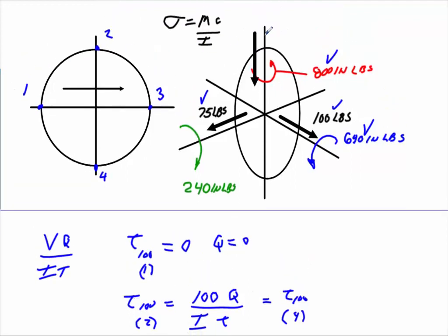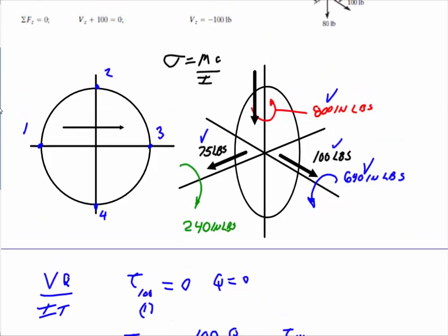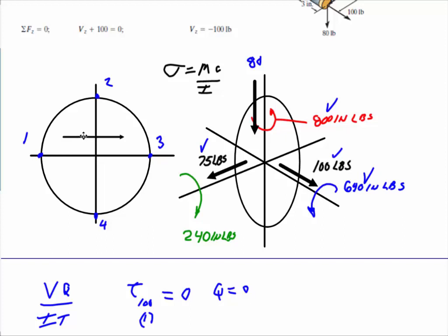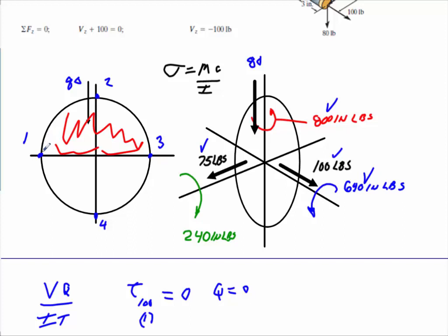Now if I want to find what the 80 is causing — I draw the 80 coming down — it's the same type of situation. The 80 cannot cause any shear at points 2 or 4 because I cannot get any Q value there. However, I'm going to get shear at points 1 and 3. To find that I take the whole area above the horizontal axis — that's my Q value: calculate that area and multiply it by the moment arm. So the 80 can only cause shear at points 1 and 3, anywhere above or below that line, but it cannot cause shear at points 2 or 4.